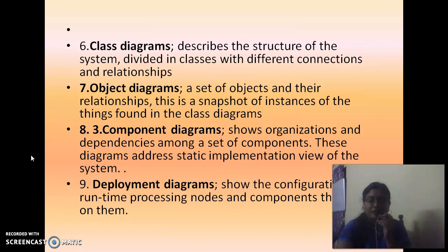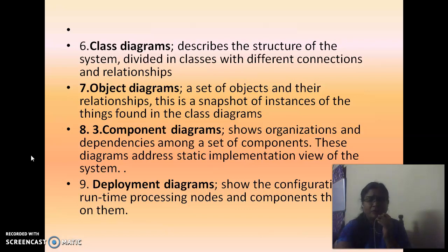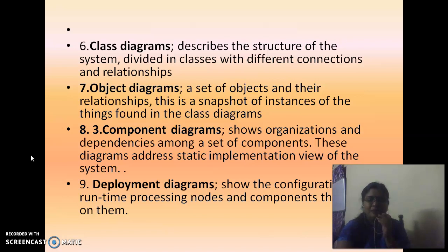So we have nine kinds of diagrams, and each can serve nine kinds of users. Each stakeholder can have their own view of the system. For example, developers can view the system from the class and object point of view, clients view functional requirements through use case diagrams, and system administrators view from a deployment perspective. All these views are developed using the nine kinds of diagrams for multiple stakeholders.